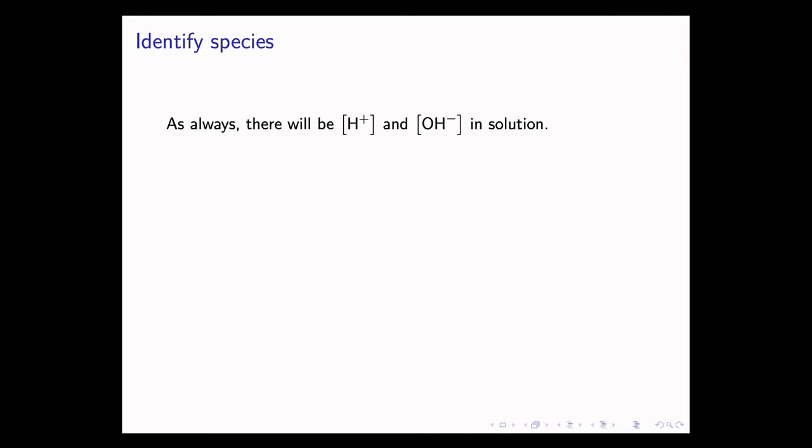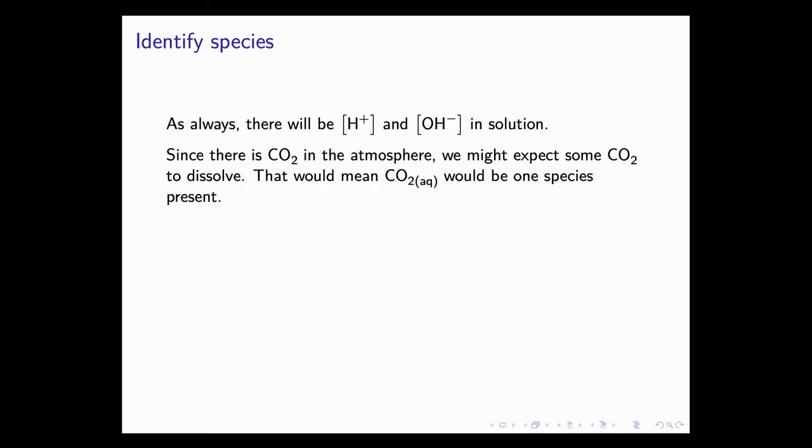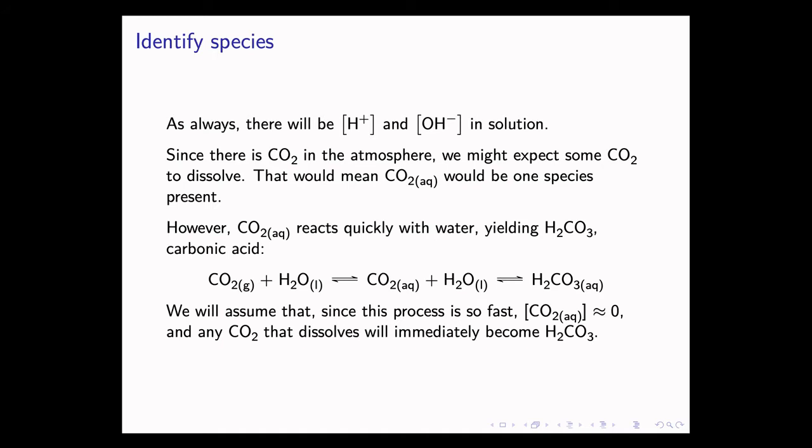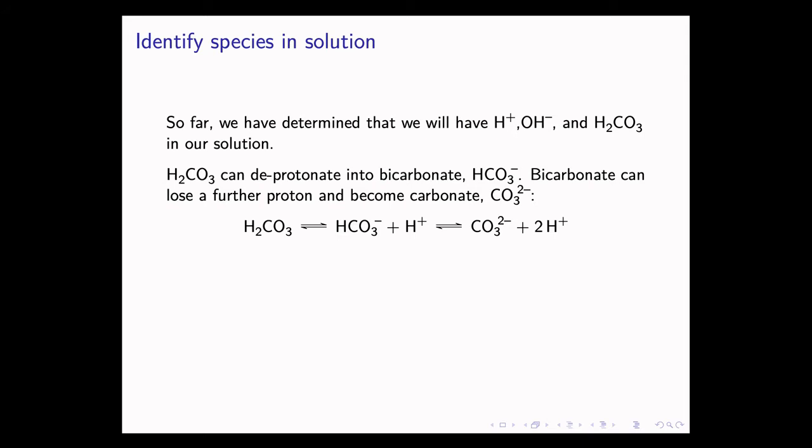Step one of the problem is to identify the species that are in solution. As always, there will be some H+ and OH- in solution. Since there is CO2 in the atmosphere, we might also expect some CO2 to dissolve in the water. However, CO2 when dissolved in water reacts very quickly with water yielding H2CO3, also known as carbonic acid. The gaseous CO2 first dissolves in water becoming aqueous CO2, and then it reacts with water forming carbonic acid. In this problem, we are going to assume that since this process is really fast, the concentration in moles per liter of CO2 is approximately zero and any CO2 that dissolves immediately becomes carbonic acid. So far we have determined three species: H+, OH-, and H2CO3 in our solution.